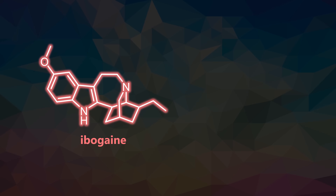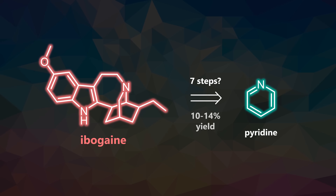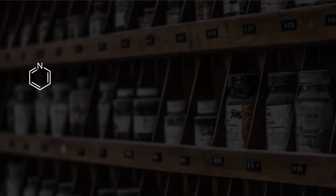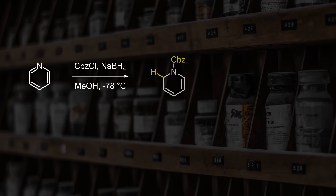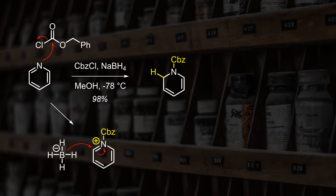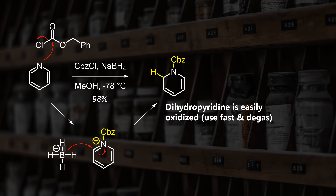Instead of spoiling all the fun with the retrosynthesis, let's jump straight into this newest and shortest approach. We start with the synthesis of a dihydropyridine derivative through acylation of pyridine followed by reduction. This intermediate is not stable — it will happily oxidize and rearrange to the pyridinium to restore its aromaticity — so it's quickly used in the next step without any purification.